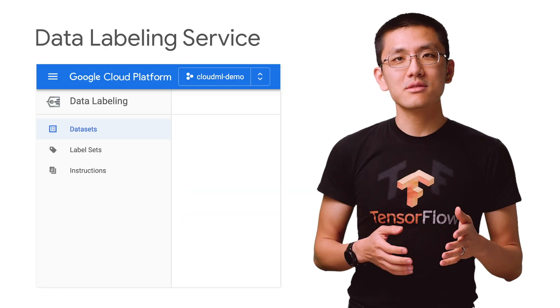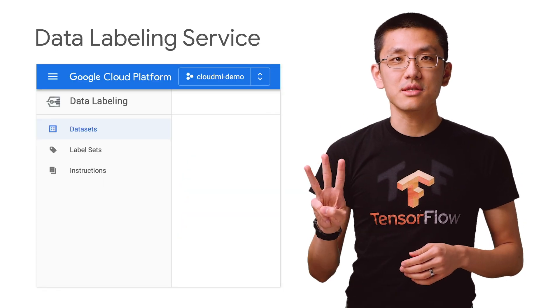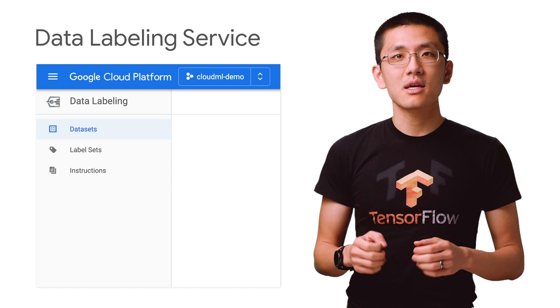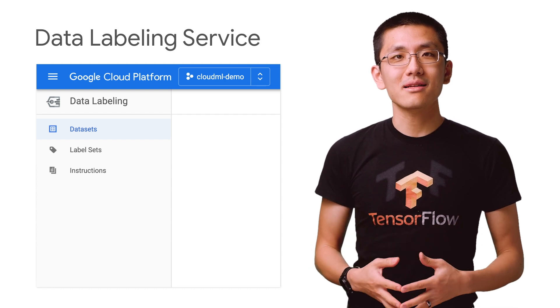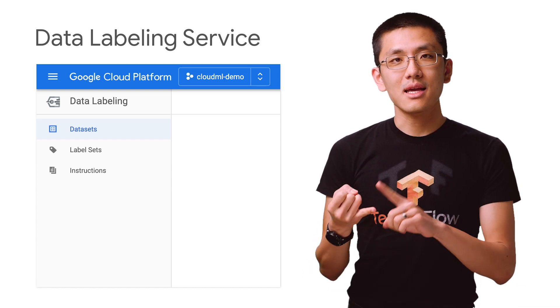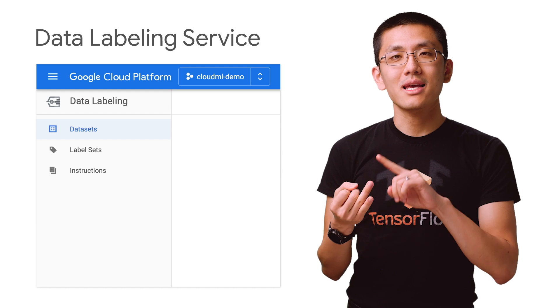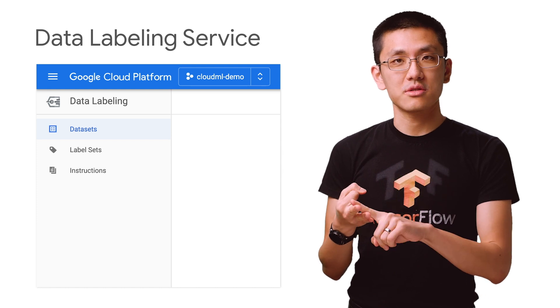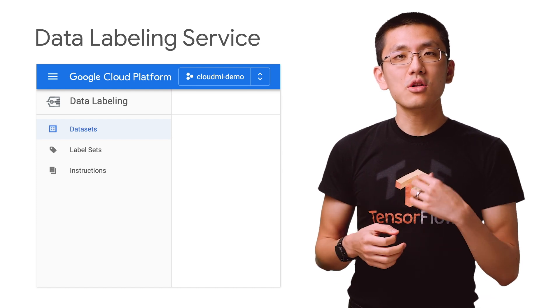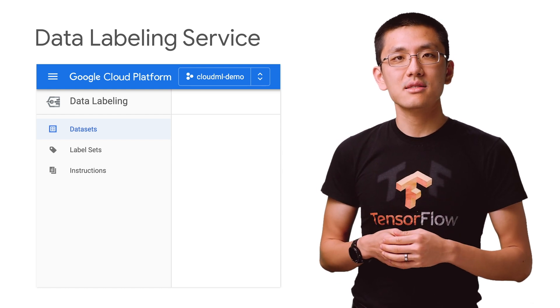The Data Labeling Service has three core resources that it uses to define a labeling task: datasets, label sets, and instructions. You'll need all three in order to create a labeling task for your data.